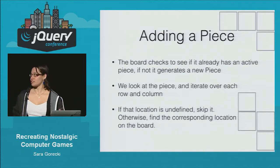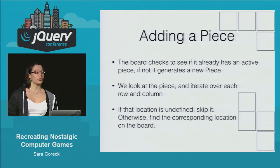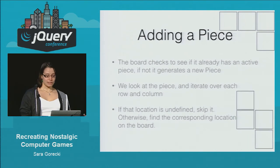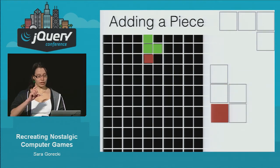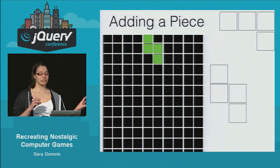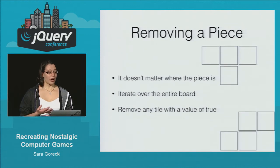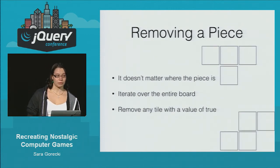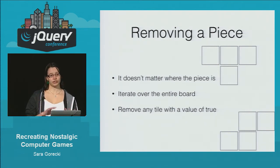First we need to add our starting piece to the board. If the board has no piece, it's going to generate a new one and pass itself into the piece. The piece knows where it is on the board — it knows the coordinates of its upper left-hand corner. The way we add a piece to the board is we check the piece template against those coordinates on the board, and when one of those tiles on the piece exists, we change the corresponding value on the board to true. To remove it, since the only true values on the board are those of the current active piece, we just iterate over the entire board and whenever we find true, turn that value to false.